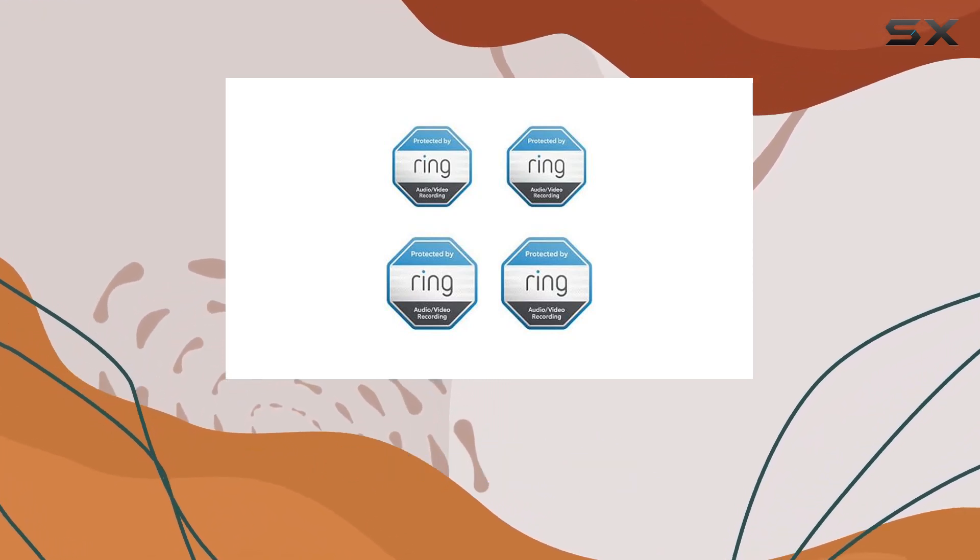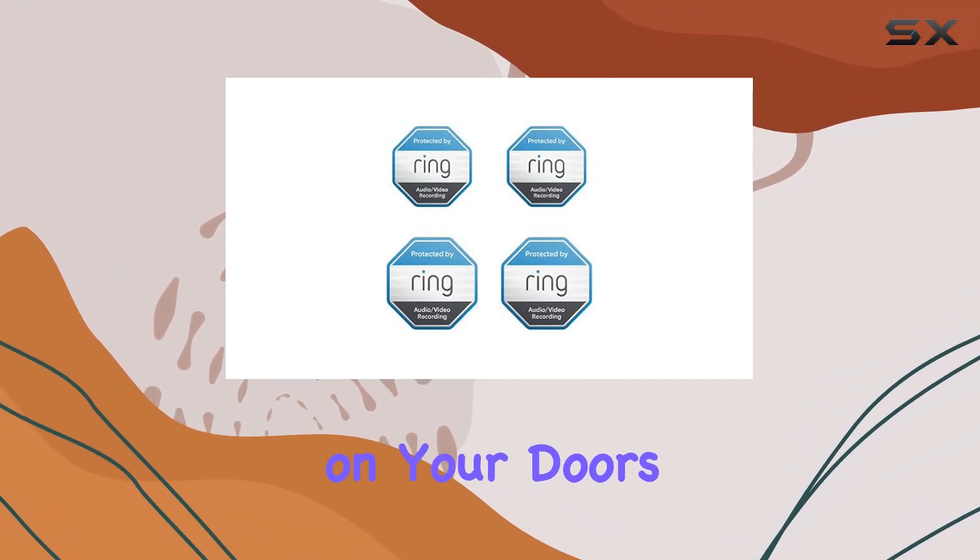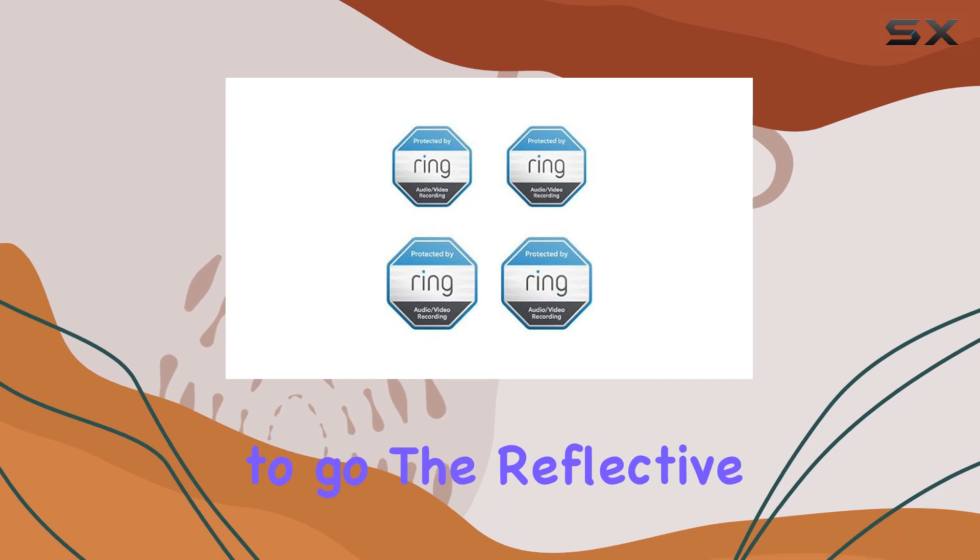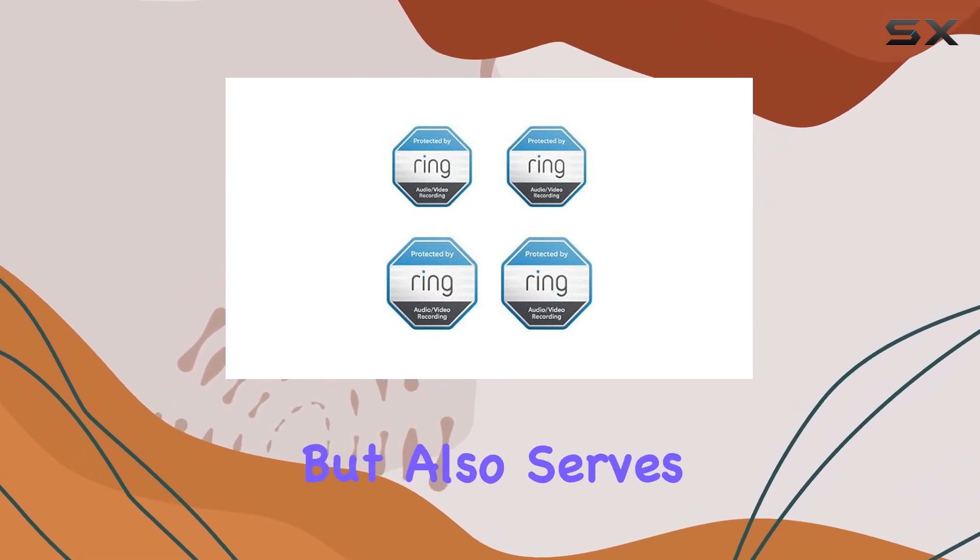Application is a breeze. Simply peel and stick these on your doors and windows and you're good to go. The reflective material not only adds a layer of security but also serves as a deterrent, letting potential intruders know that your home is protected by Ring.